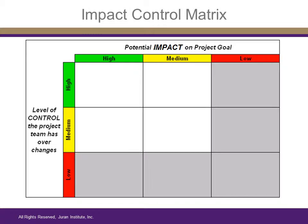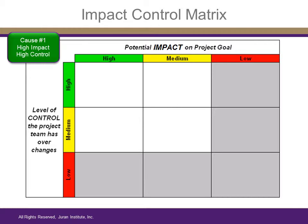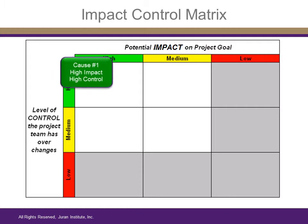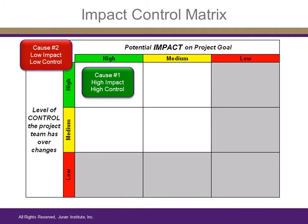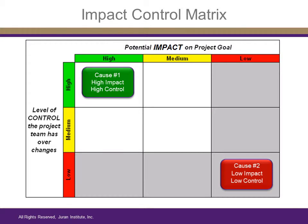Let's assume that our project team takes a look at their first potential cause. For the sake of the example, let's say they agree that the potential cause is both high impact and high control — this would be placed in the top left portion of the matrix. Now, let's assume that another potential cause is low impact and low control — this would be placed in the bottom right portion. A third potential cause with high impact and medium control would also be placed in the top left portion of the matrix.